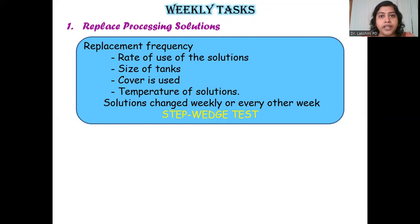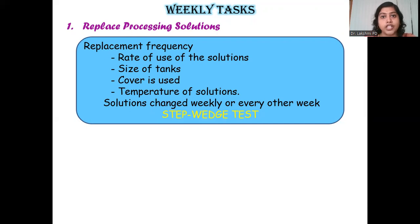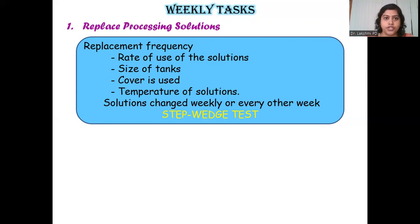The size of tanks also plays a major role: larger tanks allow processing solutions to be used for longer. Using covers is important, as oxidation by atmospheric oxygen can lead to depletion. If covers are properly replaced after every use, it can prolong the time before replacement is needed. Ultimately, your step wedge test or reference films will tell you when it is time to replace your processing solution.